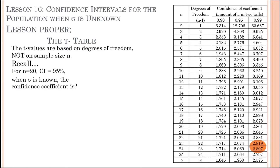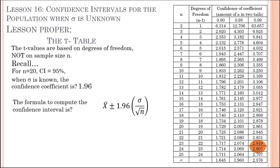Let us recall: for n equals 20 and a confidence interval of 95% when the standard deviation is known, the confidence coefficient we use is 1.96. Therefore, to compute the margin of error, we use the sample mean plus or minus 1.96 multiplied by the population standard deviation divided by the square root of the number of samples.